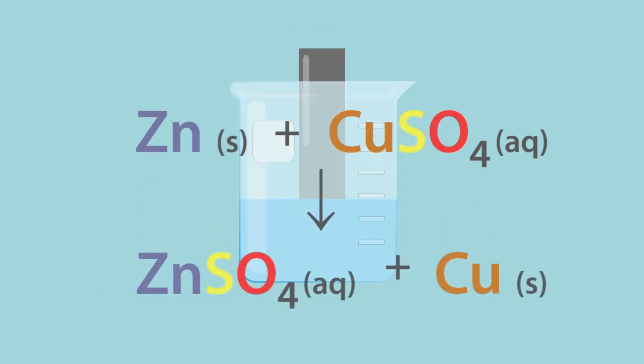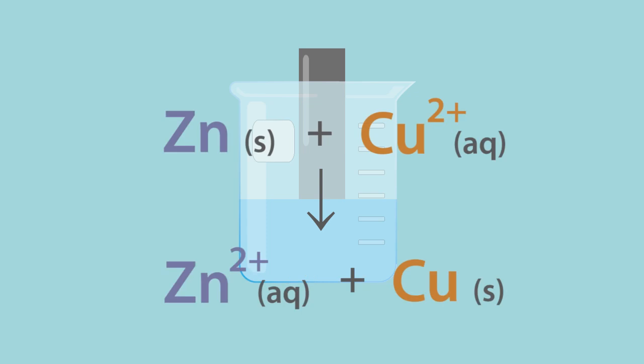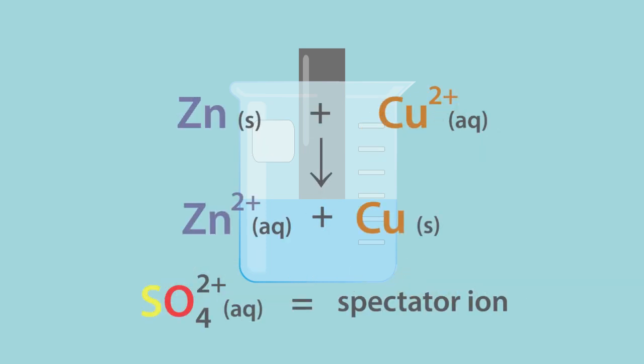Notice that this reaction takes place in the solution. The metal ions and the sulphate ions are split up. We can rewrite this equation omitting the sulphate ions because these do not take part in the reaction. They are a special kind of counter ion, called a spectator ion.